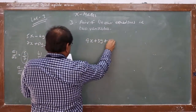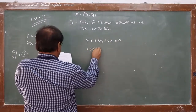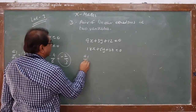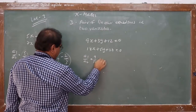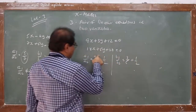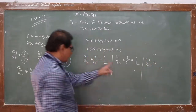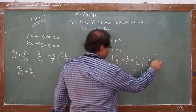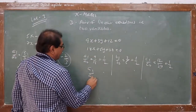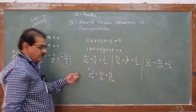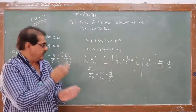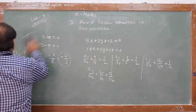Second sub-question: 9x + 3y + 12 = 0 and 18x + 6y + 24 = 0. Check a1/a2 = 9/18 = 1/2; b1/b2 = 3/6 = 1/2. Both equal, so check c1/c2 = 12/24 = 1/2. All three ratios are equal: a1/a2 = b1/b2 = c1/c2 = 1/2. Conclusion: both lines are coincident — falling on each other — so there are infinitely many solutions.